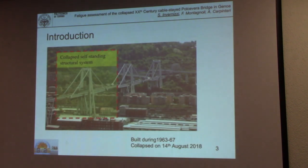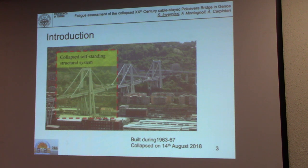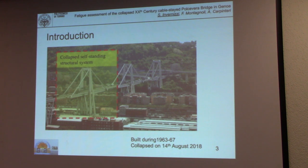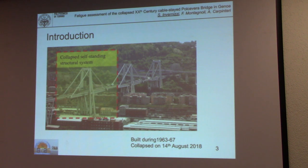This is a picture of the bridge before the collapse. The structure dated 1973 and was constructed by the 1970s of the last century. Conceived by engineer Morandi, it was an icon for Italy and for the technology of the time. The whole viaduct is quite complex, and we will concentrate on one of the three main structural systems — according to Morandi's view, called a self-standing structural system.